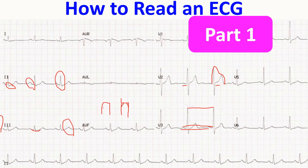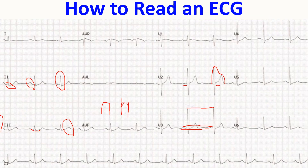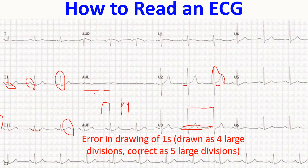This square wave corresponds to 10 millimeters per millivolt. On the horizontal axis, 5 large squares or 25 small squares correspond to 1 second, because the standard ECG paper speed is 25 millimeters per second.